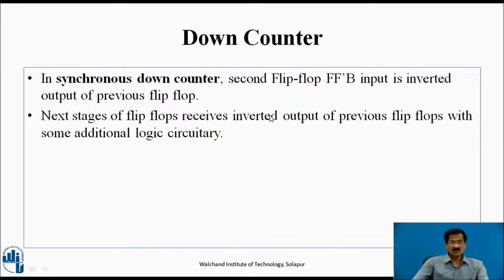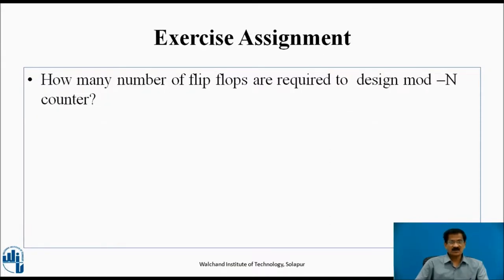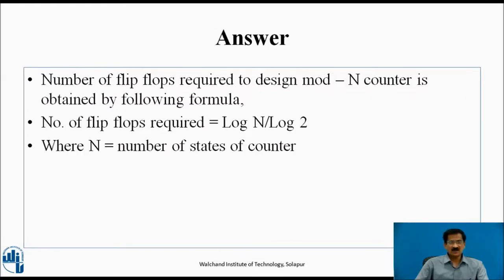In the down counter, the FFB input is the inverted output of the previous flip-flop, whereas next stages receive the inverted outputs with additional AND gate logic. Exercise Assignment: How many flip-flops are required to design a mod-N counter? The answer is: number of flip-flops = log(N) / log(2), where N is the number of states of the counter.